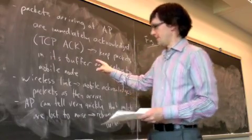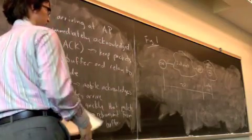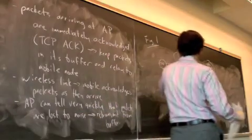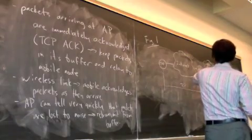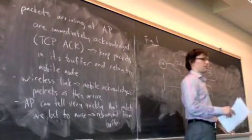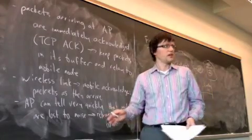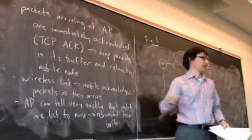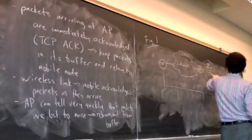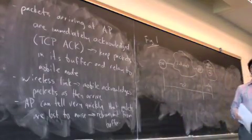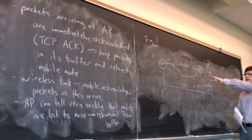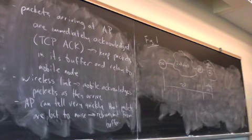So in other words, remember the access point as it acknowledges the TCP packets, it's keeping the packet in its own buffer for a certain period of time. If any of those are lost, basically those are kept until they're properly acknowledged by the mobile node. If any of those packets are lost over this wireless link, they can just be simply retransmitted from the buffer.